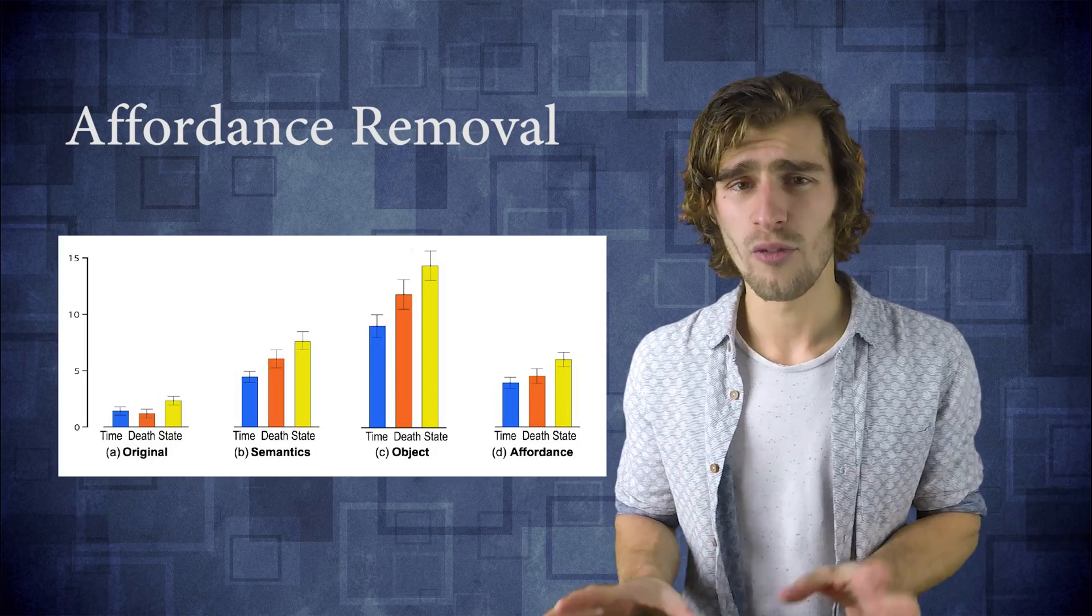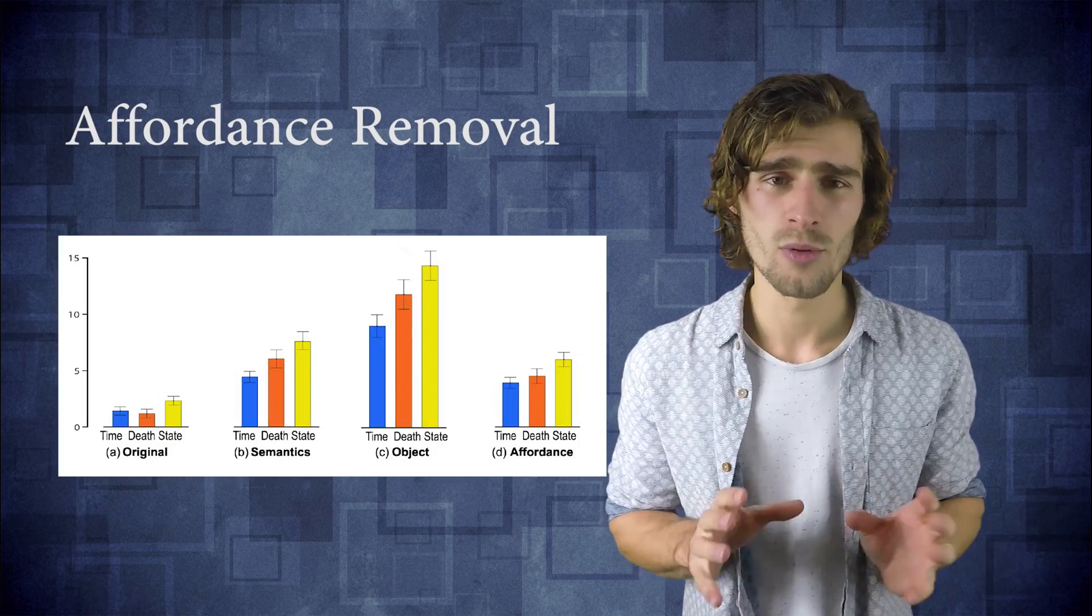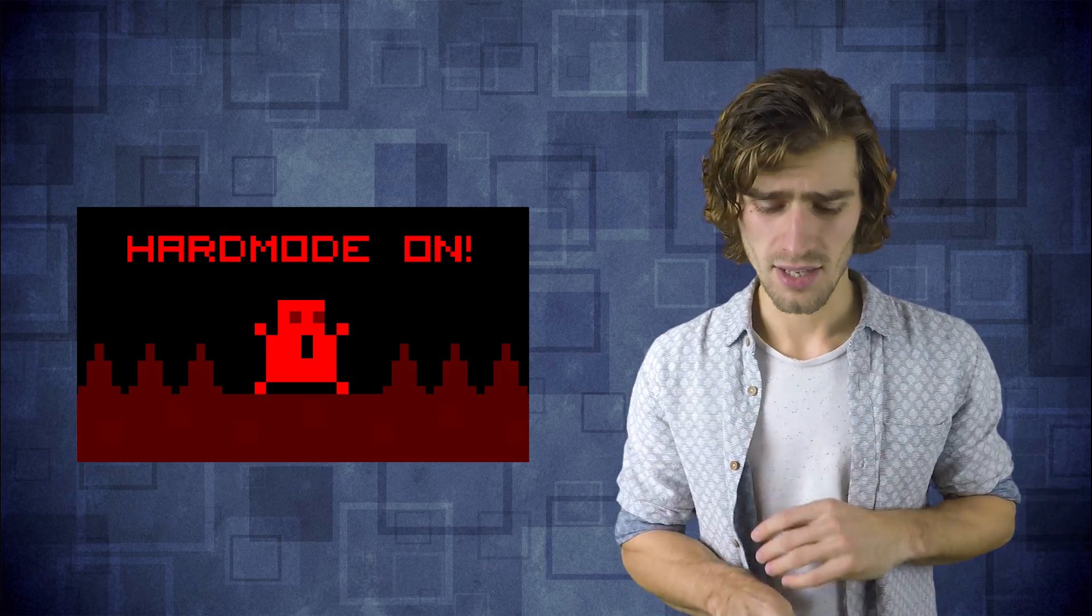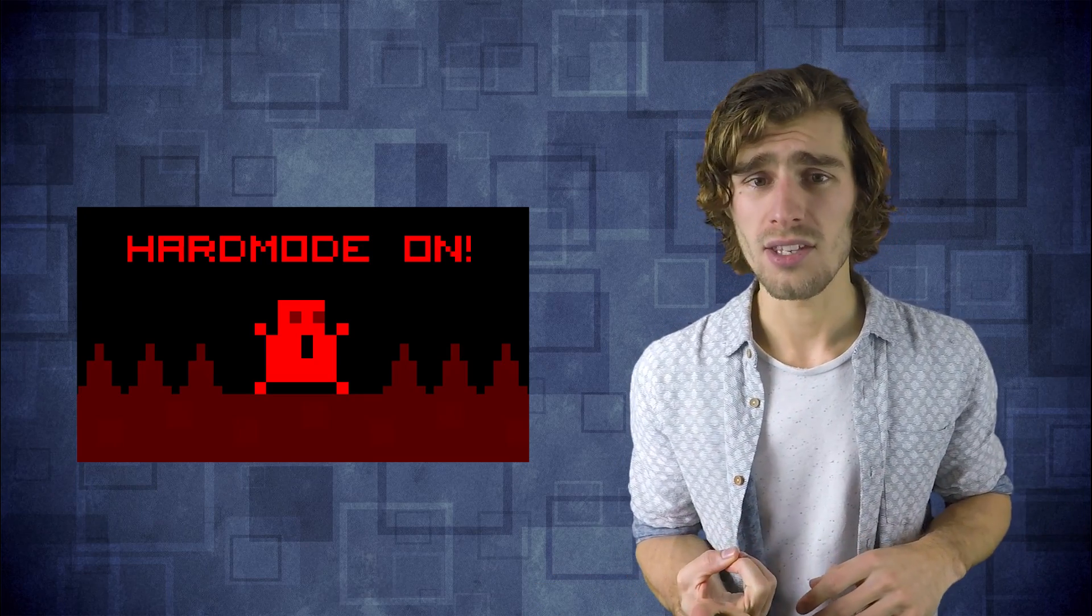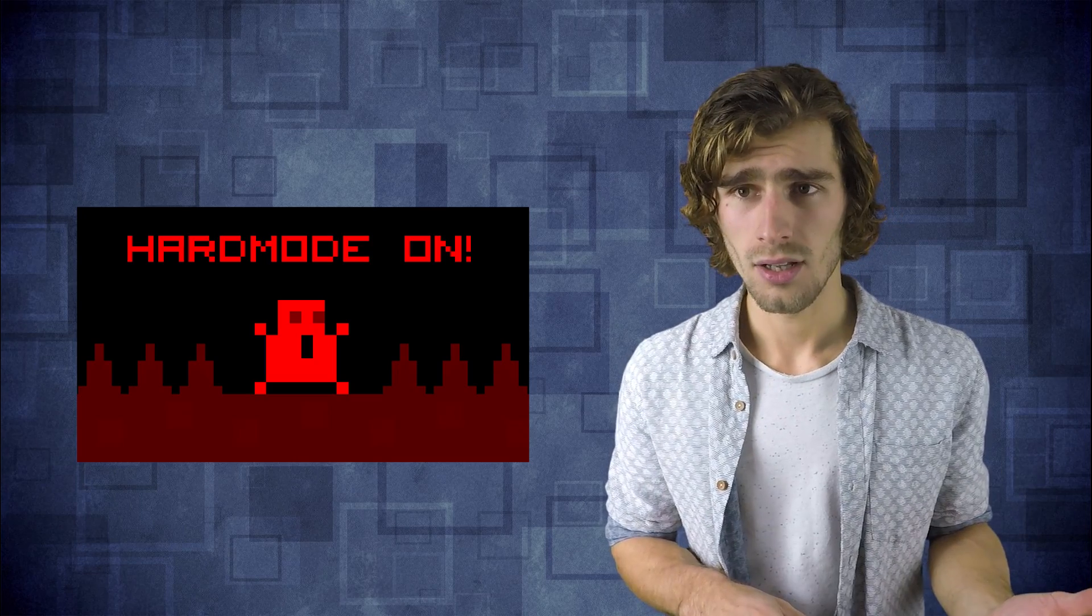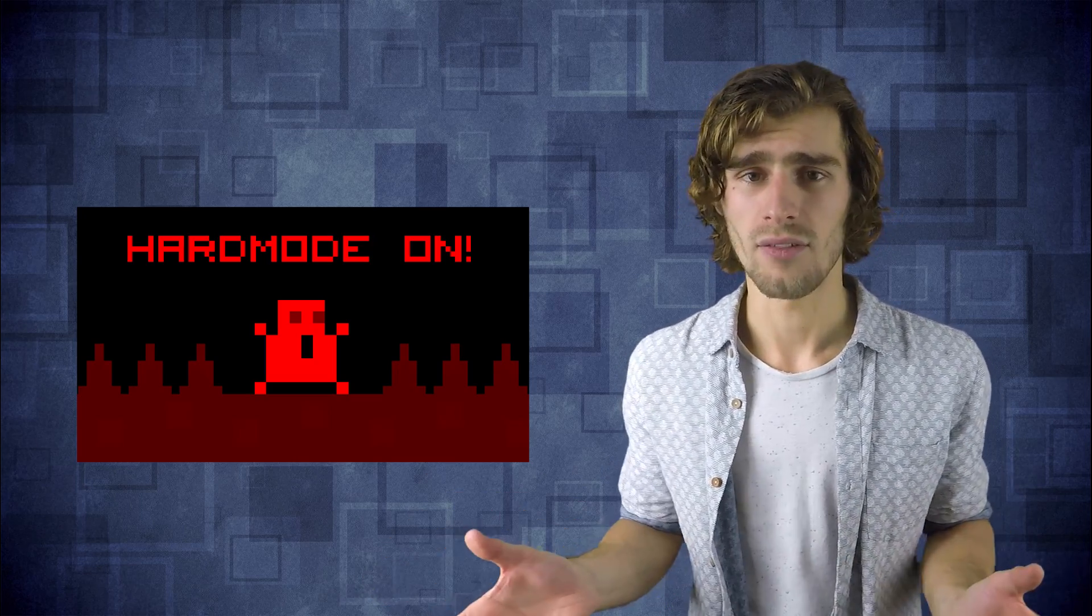We call this removal of affordance, and it turns out that removing affordance is not as bad as removing object semantics. Then at the end, the researchers decided they wanted to go hardcore mode. They rotated gravity by 90 degrees, switched the left and right control keys, and remapped all of the affordance textures. Even the game designers themselves couldn't solve the level anymore. Point proven, we got it guys.